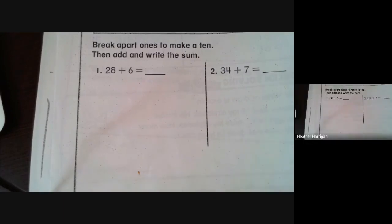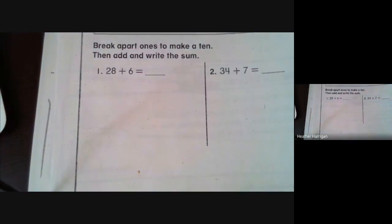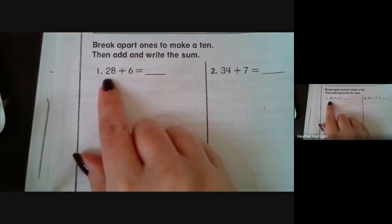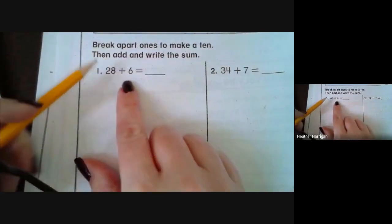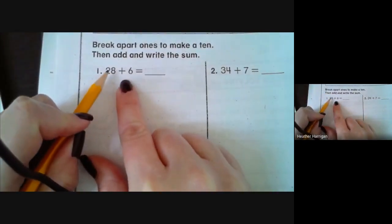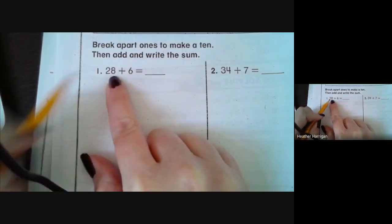Today we're going to explore a two-digit addend and a one-digit addend, breaking it apart to make a ten to find a sum. For example, if I have 28 plus 6, I want to take this 28 and make it a multiple of ten, so that would make it 30.